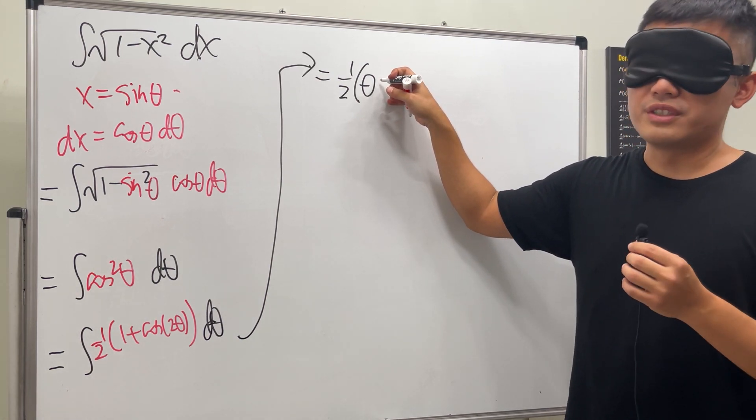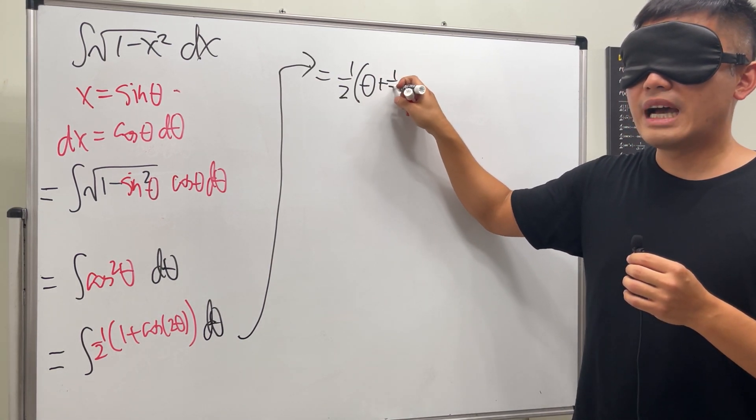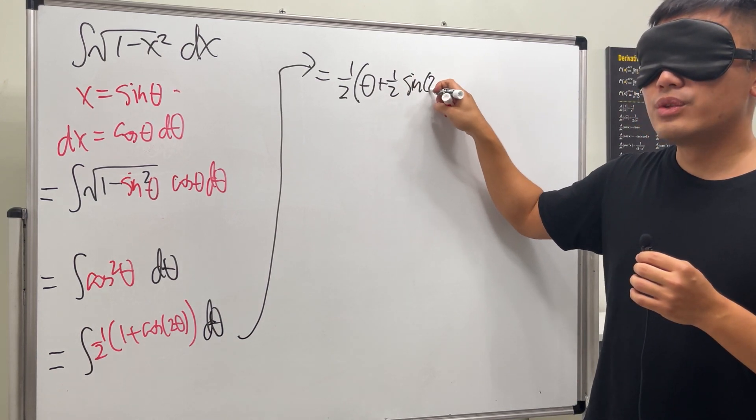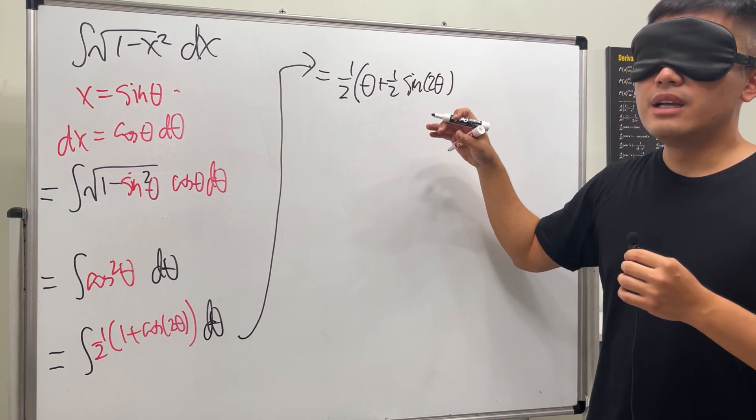So we'll just add one half sine two theta like this. Don't worry about the plus C because technically we are not done yet.